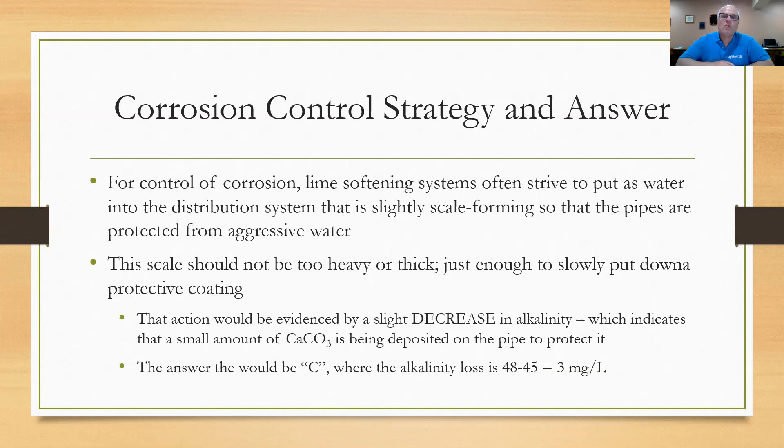So for corrosion control for lime softening systems, they often strive to put a water into the system that is slightly scale forming so that the pipes are protected from aggressive water. The scale should not be too heavy or too thick, just enough to slowly put down a protective coating. So the action would be evidenced by a slight decrease in alkalinity, which indicates that a small amount of calcium carbonate is being deposited from the water onto the pipe. So the answer then would be C. The alkalinity loss is 48 down to 45, or 3 mg/L loss. It's the only one that is logical. So that's the answer C.